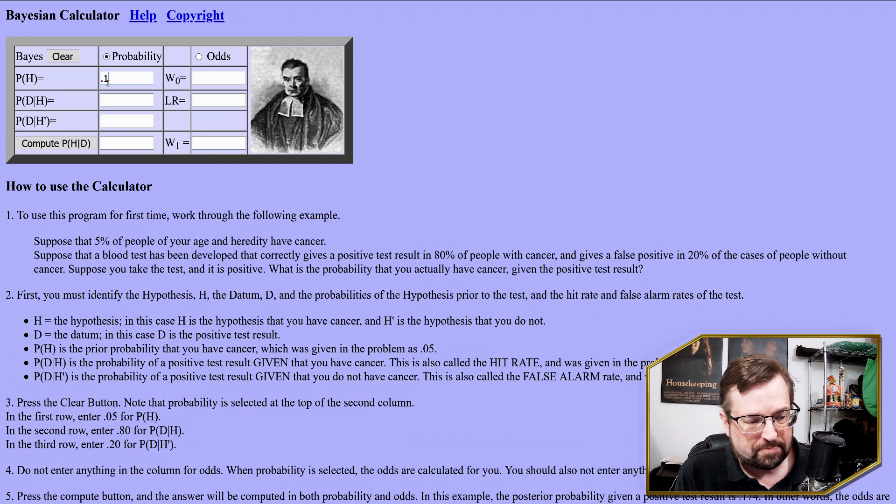So given that we have a positive result, what is the probability that we have COVID? So we're starting with the 10% prior. And then we go P of D given H. And it says it's the probability of a positive test result, given that you have cancer, or in this case, COVID. This is also called the hit rate. So if we're going to assume that we have COVID, what are the chances that the test will tell us that? And so the corollary of that is the false negative. If we have COVID, but it comes back and tells us that we don't, what's the chance of that?